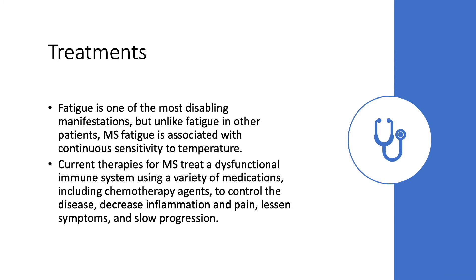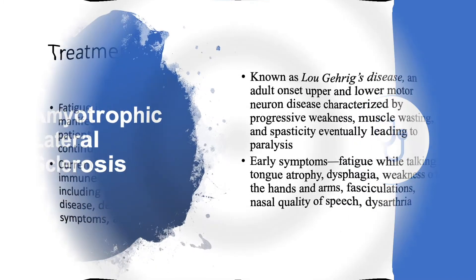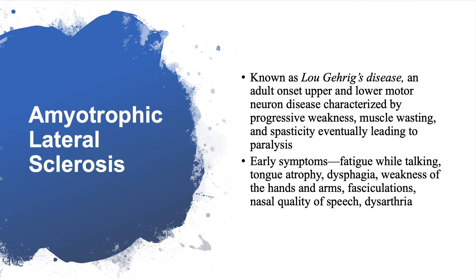Another diagnosis that will need differentiating is amyotrophic lateral sclerosis, ALS, or Lou Gehrig's disease. ALS is an adult-onset upper and lower motor neuron disease characterized by progressive weakness, muscle wasting, and spasticity, eventually leading to paralysis. Early symptoms include fatigue while talking, tongue atrophy, dysphagia, weakness of the hands and arms, fasciculations, a nasal quality of speech, and dysarthria.